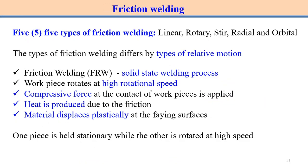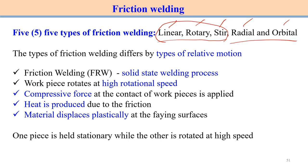Now talking about friction welding — one of the solid state welding processes. There are different types of friction welding: linear, rotary, friction stir welding, radial, and orbital welding process. The type of friction — whether linear, rotary, or friction stir — distinguishes these processes. In linear friction welding, rotary friction welding, and friction stir welding, the type of relative motion distinguishes what kind of frictional heat is created.